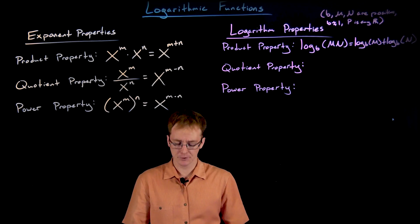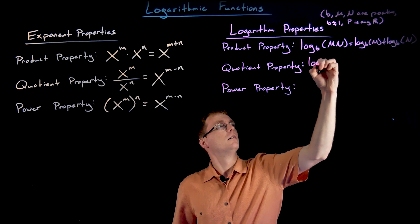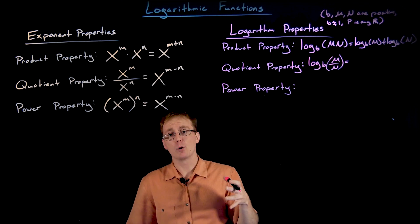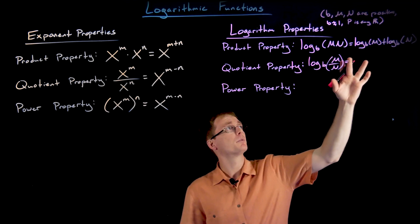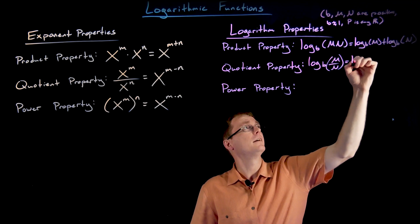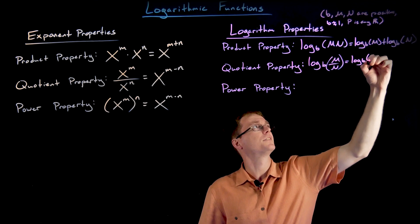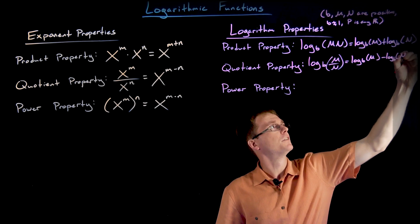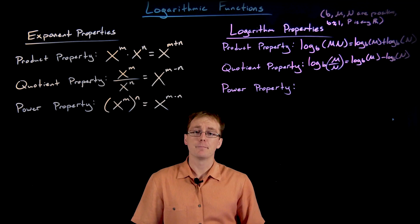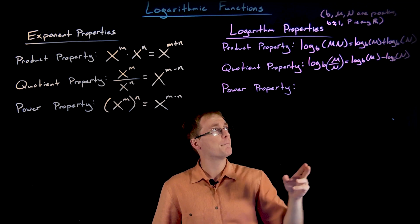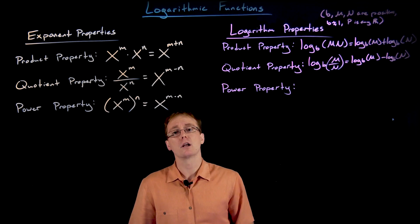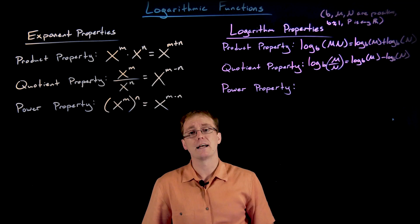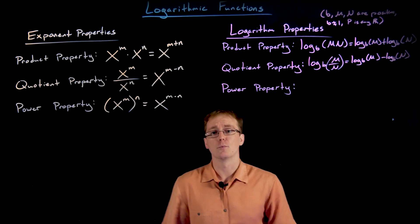Next is the quotient property for logarithms. It says that if we have the log of a quotient — log base b of M divided by N — we can break it up into two logarithms similar to the product property, except now we take the difference: it's always the log of the numerator minus the log of the denominator. So log base b of M divided by N is equivalent to log base b of M minus log base b of N. Working in reverse, if we have the difference between two logarithms, we can write it as a single logarithm whose input is the quotient of the original inputs.